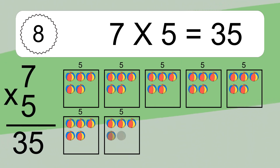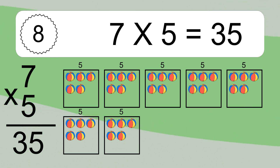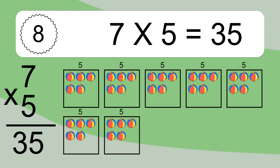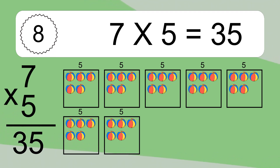7 times 5 equals what? We have 7 boxes, and each box has 5 colorful balls inside. If you count all the balls in all the boxes together, you will have 7 times 5 balls. This equals 35 balls.